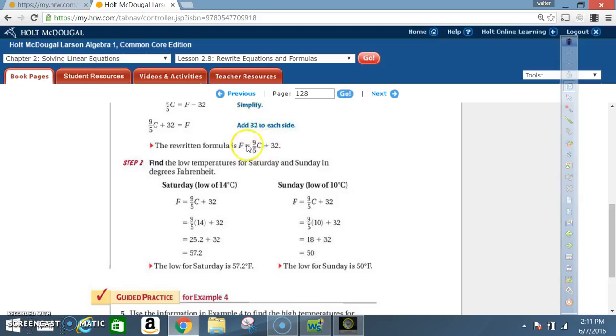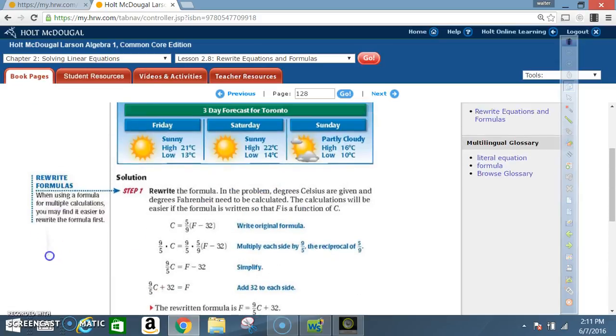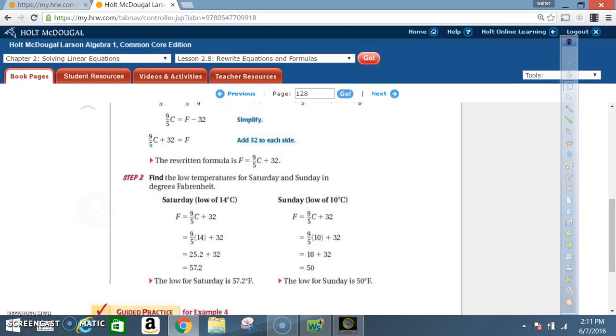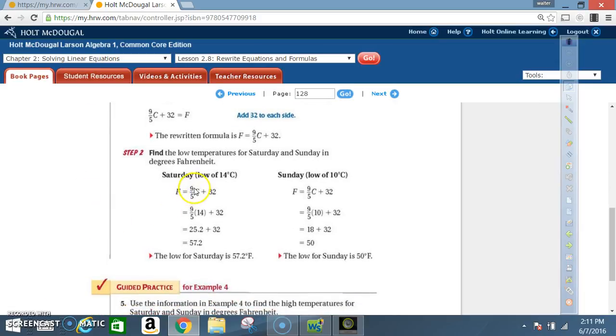Now we take the formula that we just solved for. F equals 9 over 5 times C plus 32. And then we replace the temperature Celsius into the equation to find the Fahrenheit value. So the low for Saturday was 14 degrees Celsius. The low for Saturday was 14 degrees Celsius. So we're going to take that and put that in our equation.